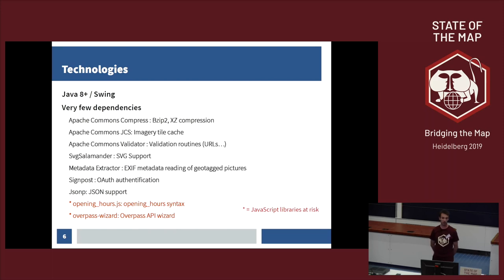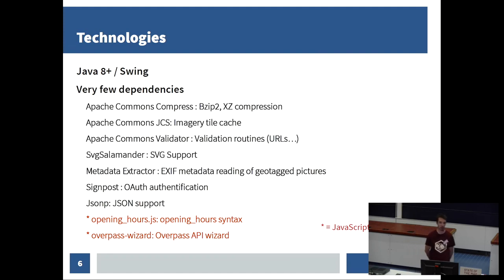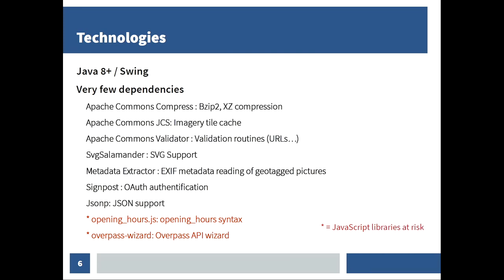Concerning the technologies themselves, JOSM is built using Java version 8 or later, and is built using the Swing UI framework that is shipped with Java. We have very few software dependencies — here is the exhaustive list. These dependencies are designed for very specific parts of JOSM. We tend to do all the possible work ourselves to keep JOSM as light as possible, because binary size is important to us. The last two dependencies are written in JavaScript, and unlike the other Java dependencies, their future is at risk because of recent changes in Java governance by Oracle.